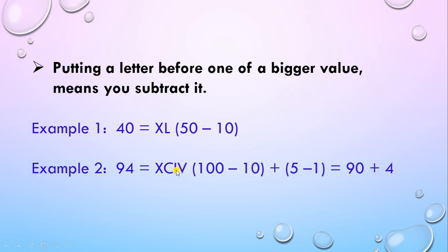Subtract I from V, that is subtract 1 from 5 to get 4. Adding the results: 90 plus 4 equals 94.